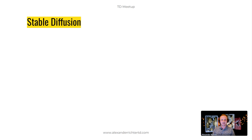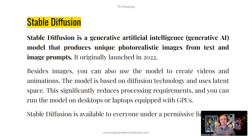Stable Diffusion is a generative AI model that produces unique photo-realistic images from text and image prompts. It was originally launched in 2022, so this technology is really fresh. Besides images you can also use the model to create videos and animation. The model is based on diffusion technology and uses latent space, which significantly reduces processing requirements — you can run it on desktops or laptops with GPUs. Stable Diffusion is available to everyone under a permissive license.